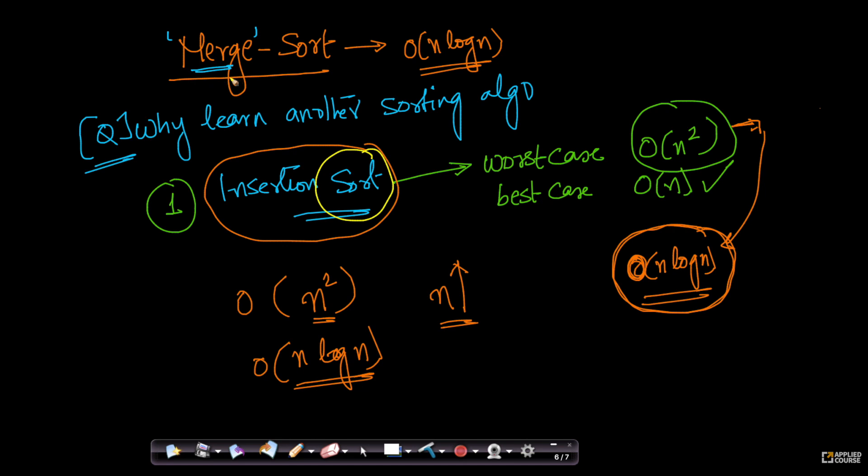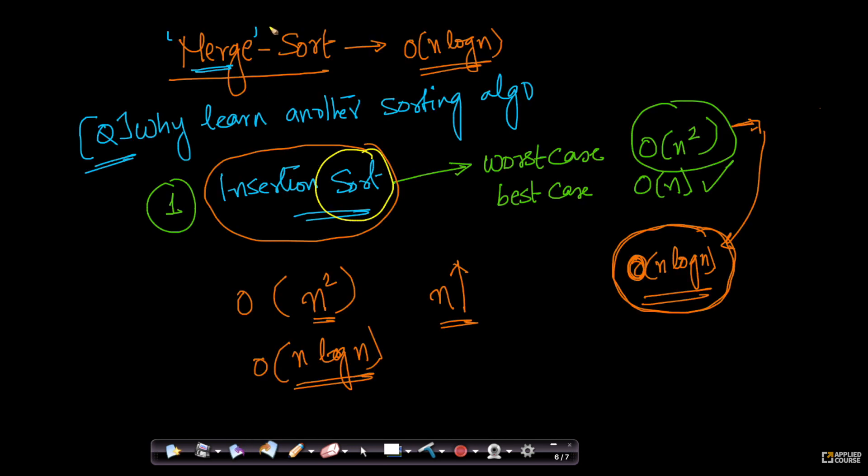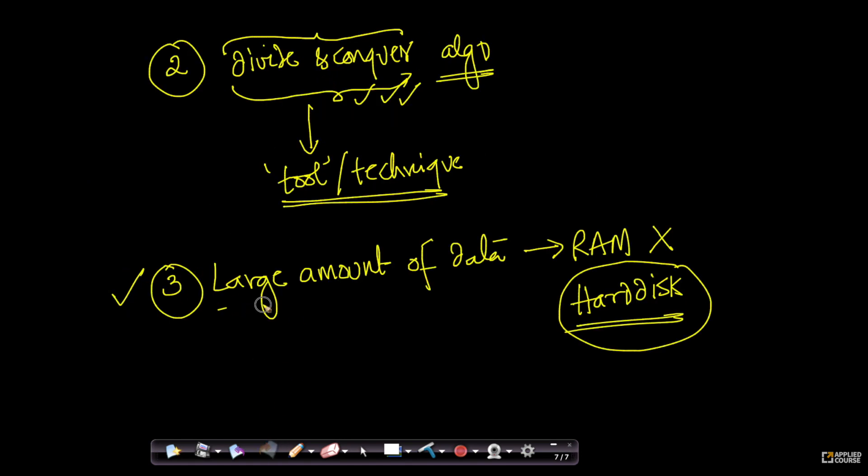There are also other applications which I cannot explain right now. For example, if you have large amounts of data or a very large array that doesn't fit into your RAM - it has to be stored in your disk, whether it's a hard disk or solid-state disk. In such a case, merge sort can work miracles. Merge sort can work better than insertion sort and many other sorting algorithms. We will come to this concept at the end of this chapter.